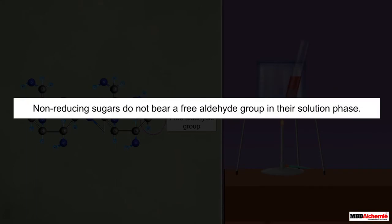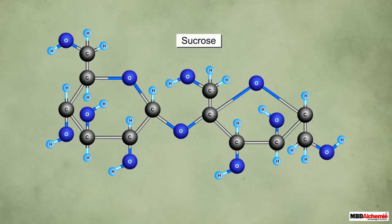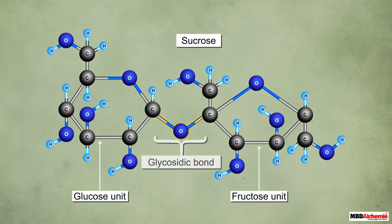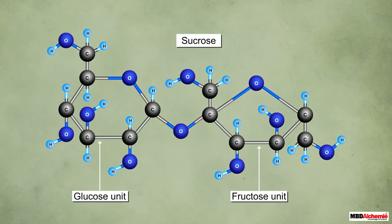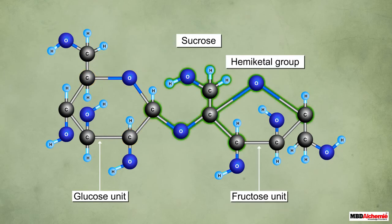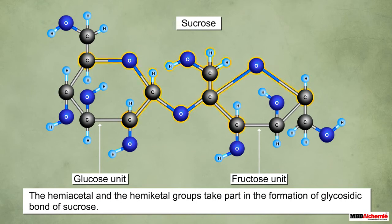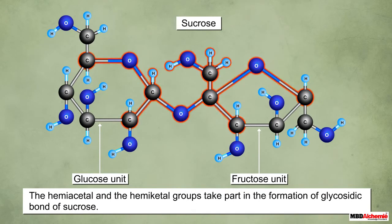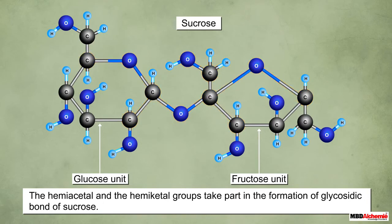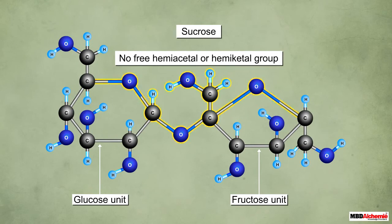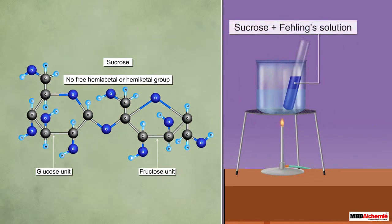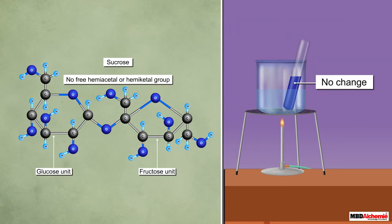In contrast to reducing sugars, non-reducing sugars do not bear a free aldehyde group in their solution phase. An example is sucrose, which is a disaccharide with one glucose unit and one fructose unit joined together through a glycosidic bond. The glucose unit has one hemiacetal group and the fructose unit also has one hemiacetal group. Both hemiacetal groups take part in the formation of the glycosidic bond of sucrose. This way there is no free hemiacetal group in the cyclic structure of sucrose, and thus in the solution phase the cyclic structure does not open and there is no free aldehyde group.